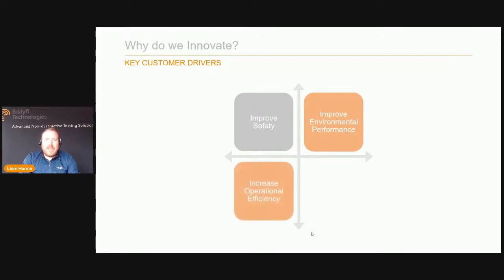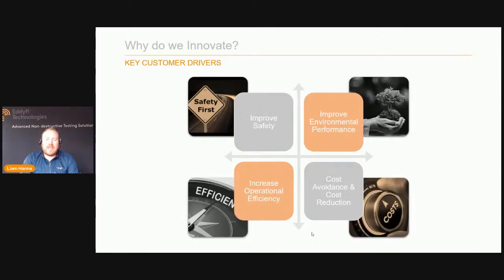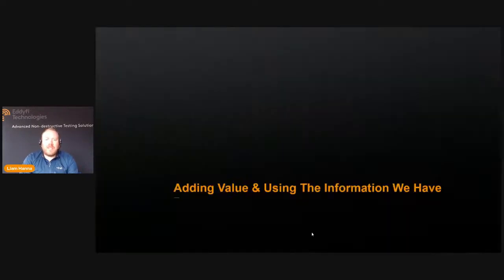We look at ways to increase operational efficiency — the ability to carry out tasks either remotely or gather more information in a shorter period of time. This aids in the final two areas: how do we avoid the effects of cost and reduce costs as much as possible? If you can do that with a robot designed to do multiple things at one time, that's a huge benefit to industry. These are the fundamentals of why we look towards innovation.